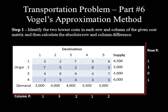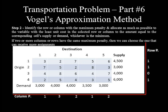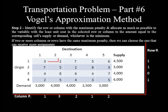Now that all row and column penalties are calculated, let's move to step 2. Among all the calculated penalties, 3 — the penalty of column 2 — is the maximum. Hence column 2 is chosen to receive the first allocation. In this column, 2 is the least cost. The demand corresponding to this selected least cost cell is 4,000 and the supply corresponding to it is 4,500. The smaller of these two, that is 4,000, is allocated to the selected least cost cell.